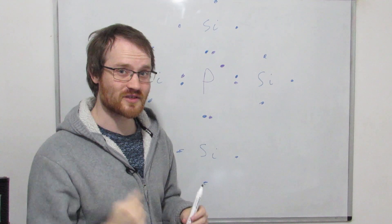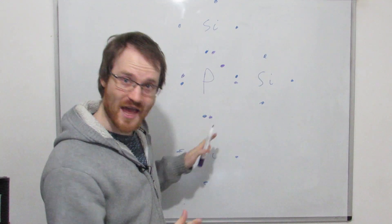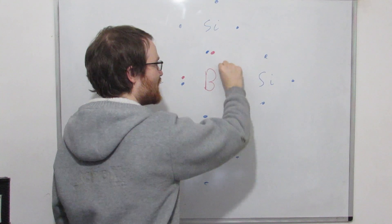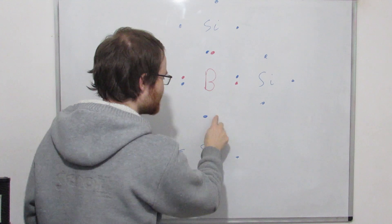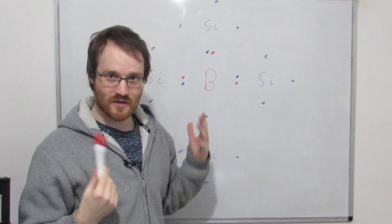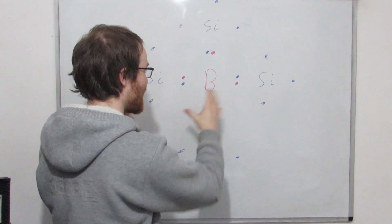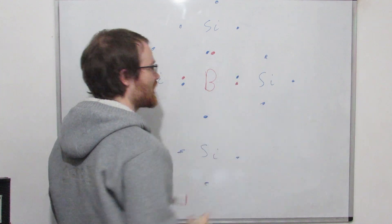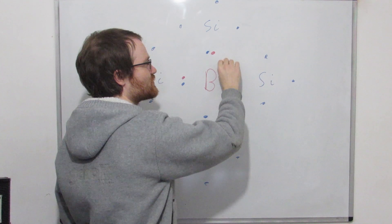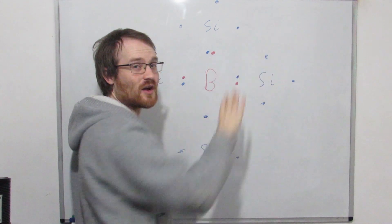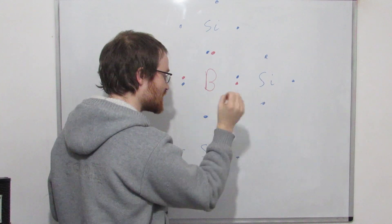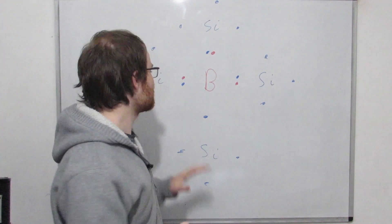If instead we put something like boron in there, boron only has three electrons in its outer shell, and remember these all want to have eight. So instead of having an extra electron floating around, we've got a gap where there's no electron — a hole. That spare electron wants to go off if it gets the opportunity, and this hole will want to get filled if it gets the opportunity.